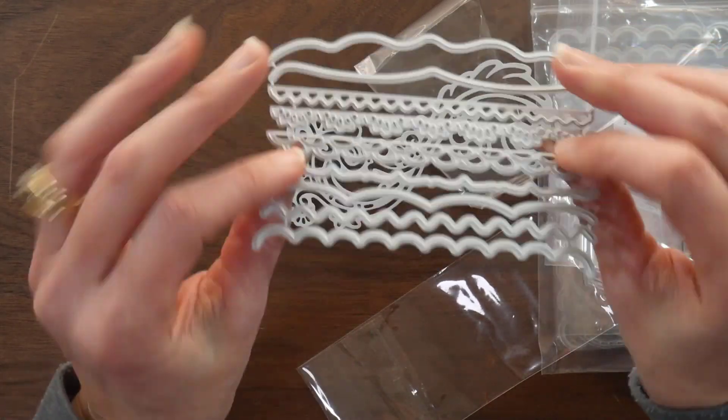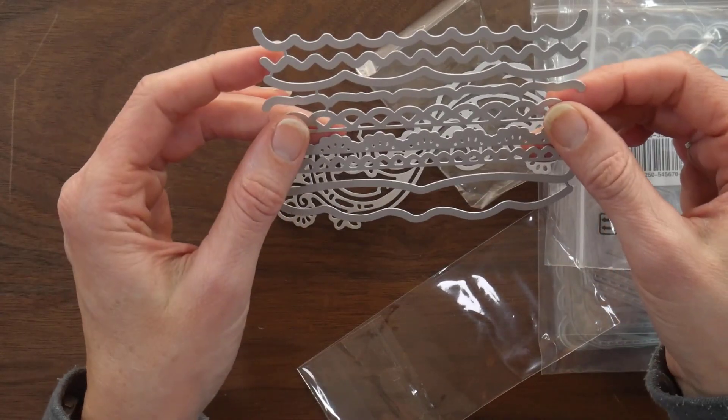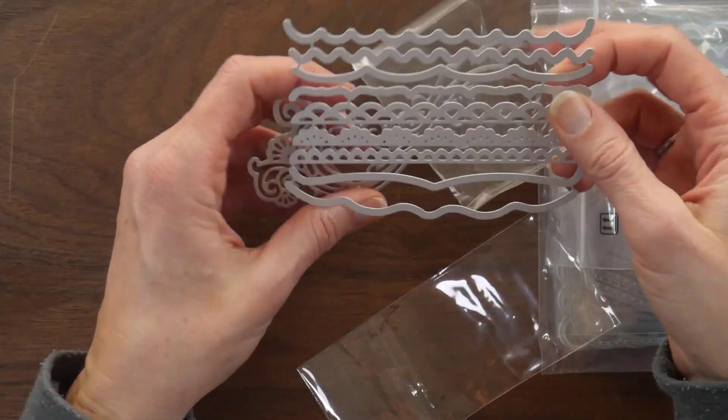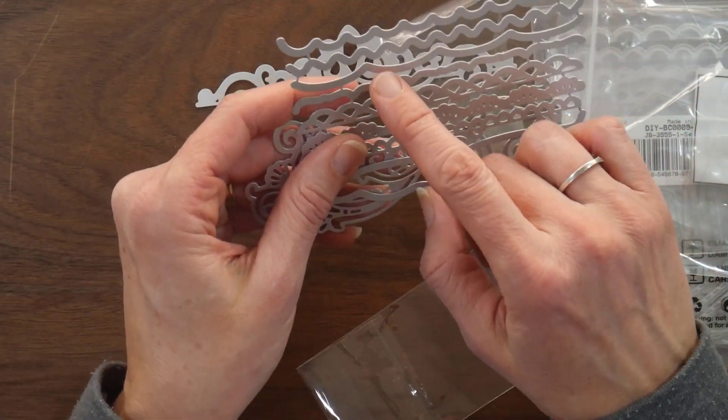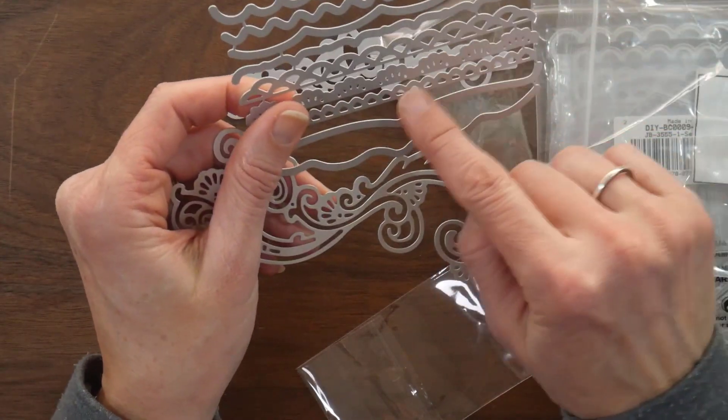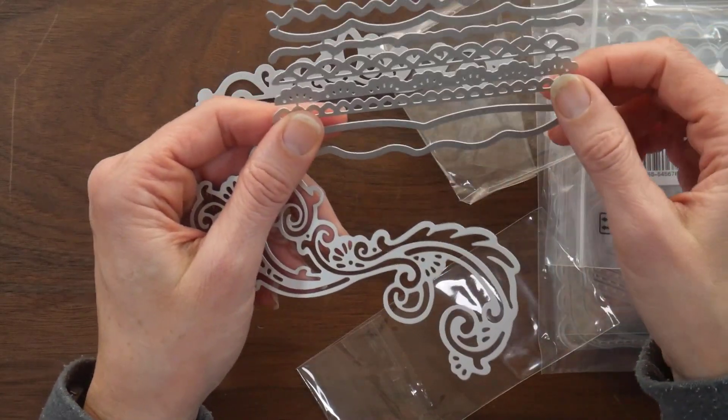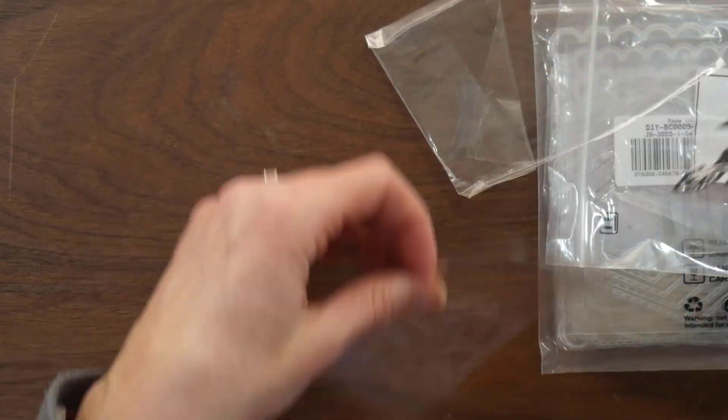I've been wanting to get some of these for a while, just to do some with my mini albums. Like I said, I have some border punches that I use that are basic scallops, but I've been wanting to add something more detailed to my stash. So I'm excited to try these out and play with those.